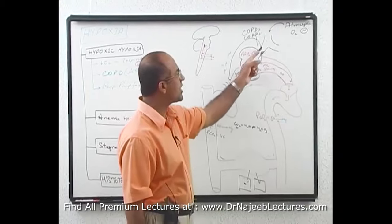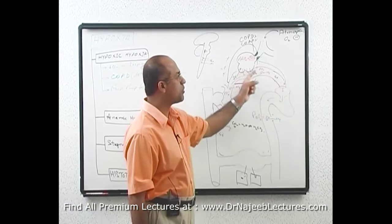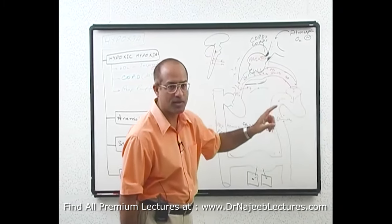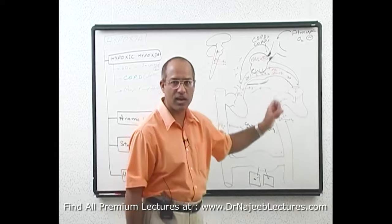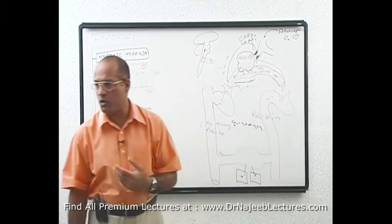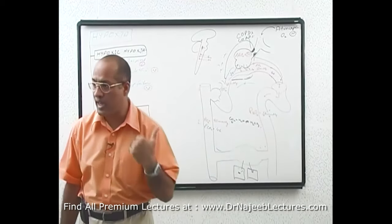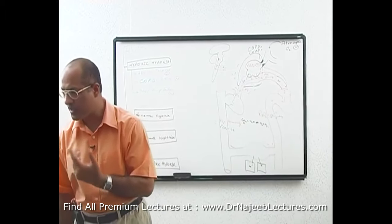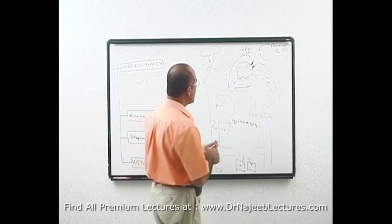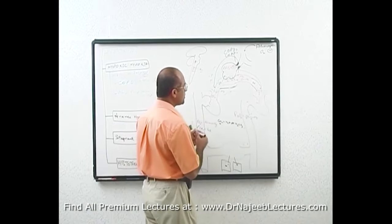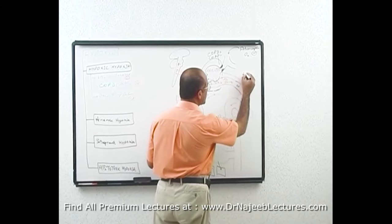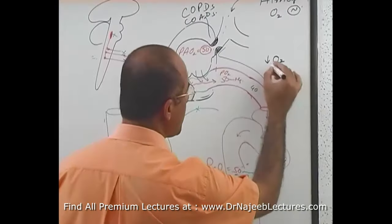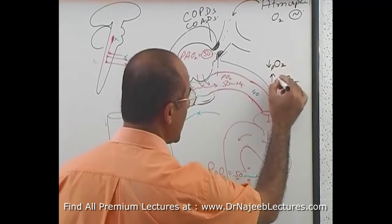Due to that reason, they are having hypoxemia plus hypercapnia. Low oxygen in the blood is called hypoxemia, and a chronically high level of carbon dioxide in the blood is called hypercapnia. These patients of COPD have chronically low oxygen and high carbon dioxide in the blood.